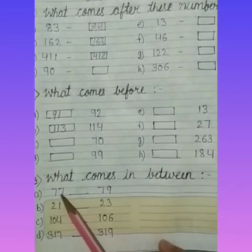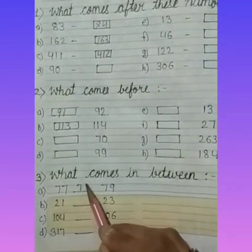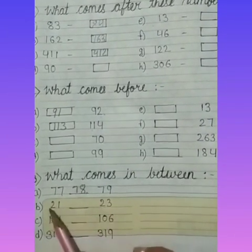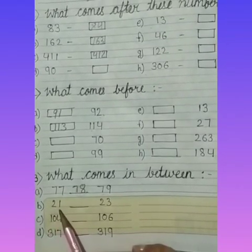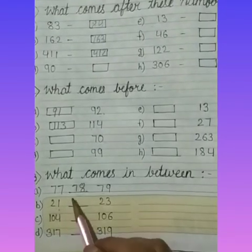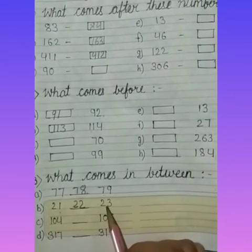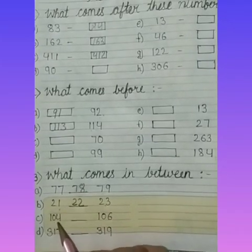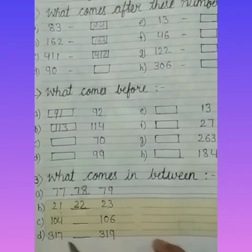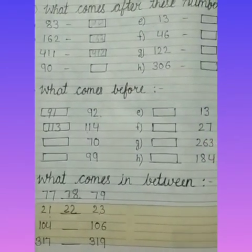Continuing: 75, 76, 77, and after 77 is 78, then 79. Number B: 21 — let's count from 21: after 21 is 22, and 23. C: 104 dash 106, D: 317 dash 319.